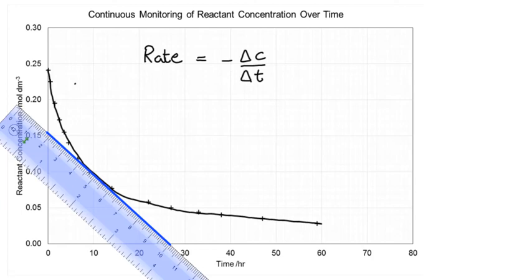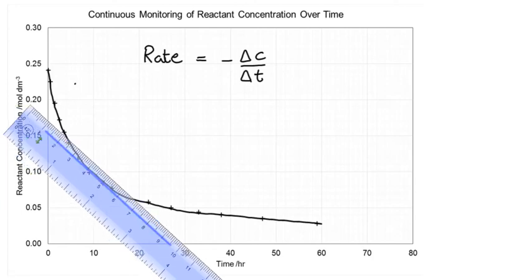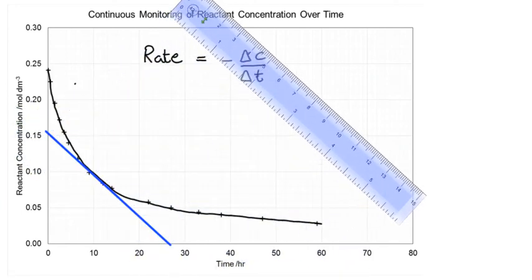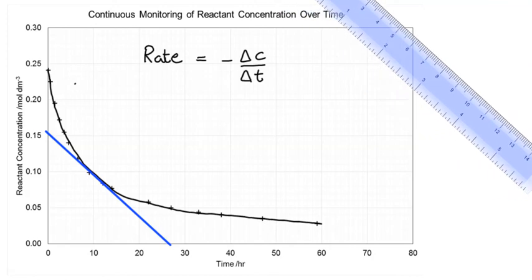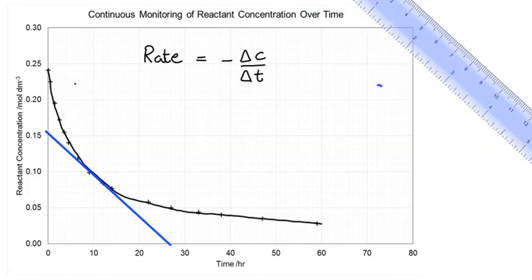And there it is. OK, the ruler has served its purpose, we can move that out of the way. OK, off it goes and now we've got our tangent at this concentration and all it's a case of doing now is just working out, plugging it into this formula.